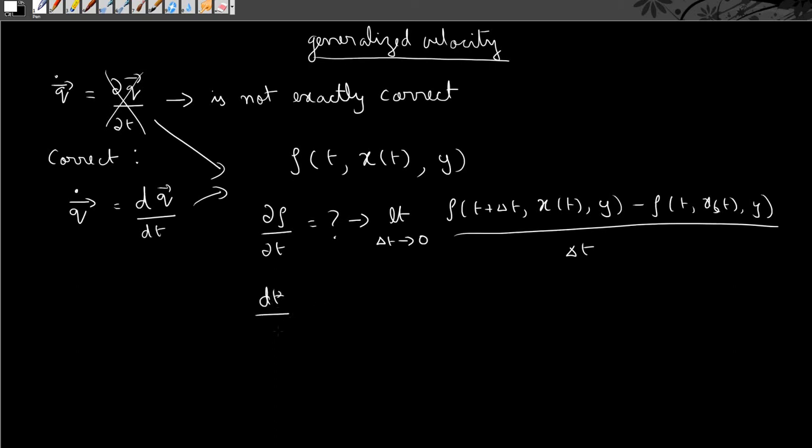Similarly, the total derivative of ρ with respect to time is defined as the limit Δt tends to 0: [ρ(t + Δt, x(t + Δt), y) - ρ(t, x(t), y)] / Δt. Note the difference here.